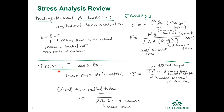The fourth loading condition is torsion, which leads to a shear stress distribution: tau equals the applied torque times the distance from the center divided by the polar moment of inertia for a solid cross section. For closed thin-wall tubes, you calculate your mean area and the thickness of the thin-walled tube. These equations will show up on your FE exam and possibly your PE exam.